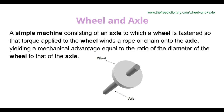The simple machine that we're going to talk about today is the wheel and axle. If you look at our diagram here, you'll see the wheel and axle is exactly what it sounds like — it's a wheel with a rod that goes through the middle, which we call our axle.